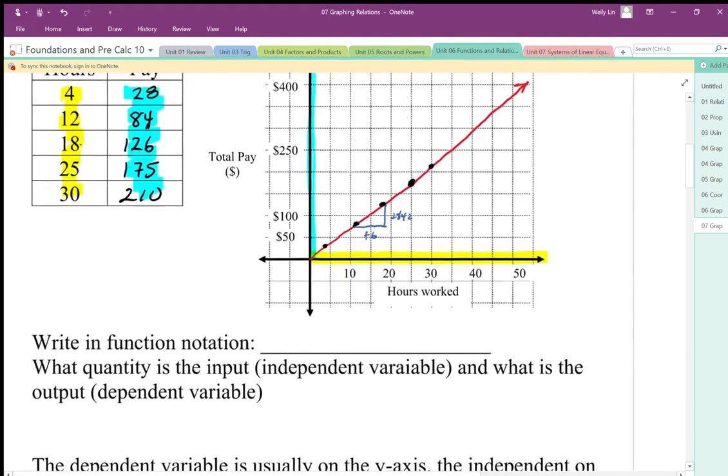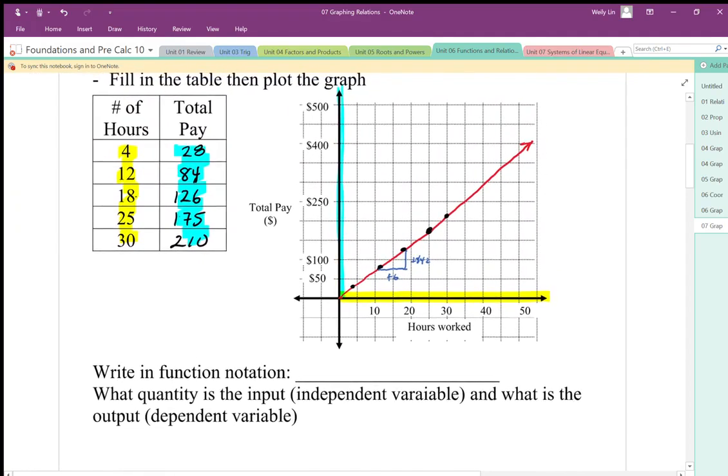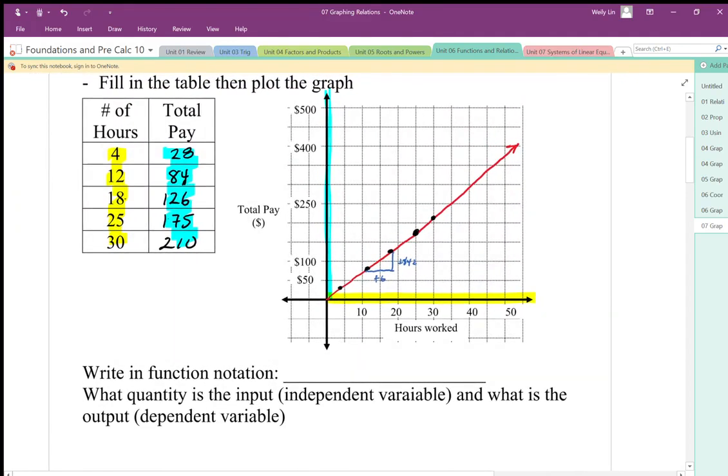So let's put this into function notation. Our input independent variable is our hours worked, and the output is our dependent variable. So in function notation, my output should be my total pay. My input is x, so I'm going to write it as f of x. And it's going to be seven times the number of hours worked gives us our output.